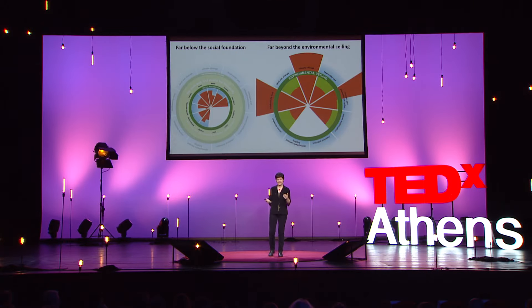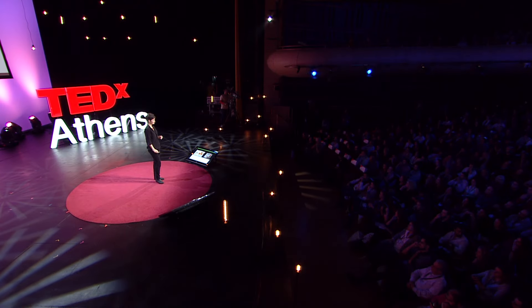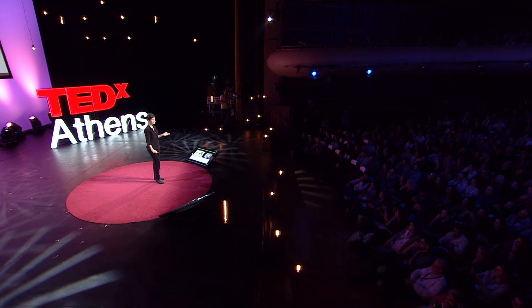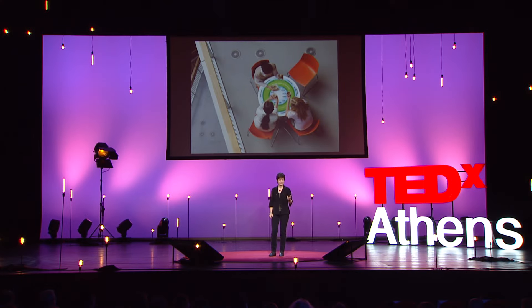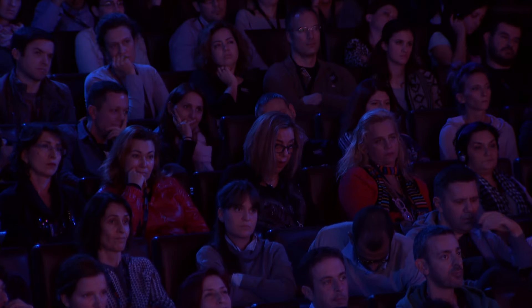But imagine if we could be the turnaround generation that actually started putting humanity back on track into that space. That would be the achievement of the century. Imagine if each of us put our own lives on this donut table and asked ourselves: how does the way that I shop, eat, travel, earn a living, vote, volunteer, bank — affect humanity's ability to come into the donut?